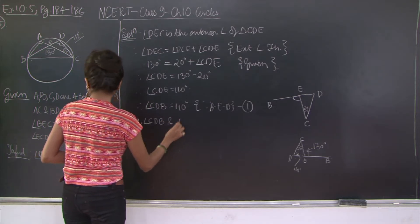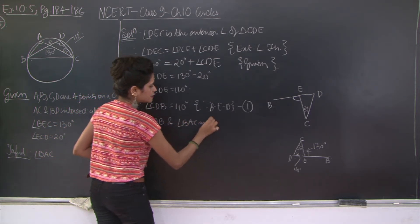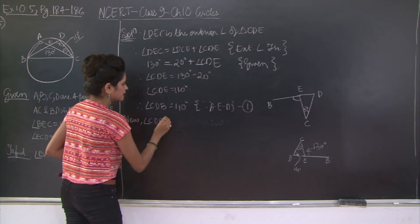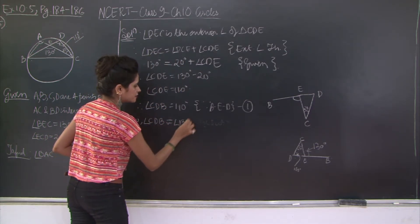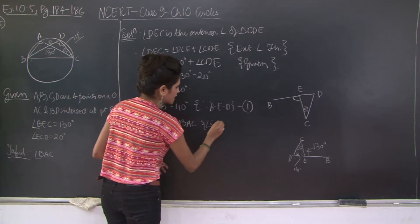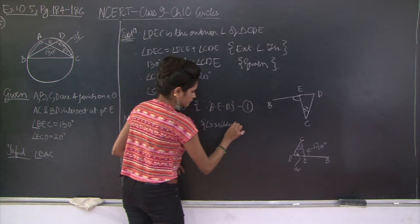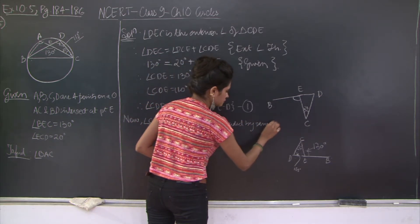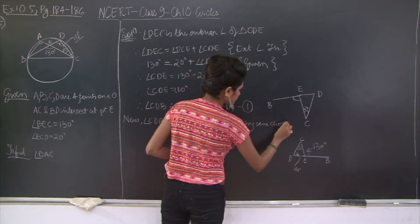Let's mark this as 1. Now angle CDB and angle BAC are subtended, rather angle CDB is equal to angle BAC.